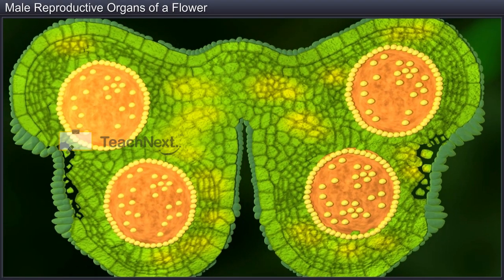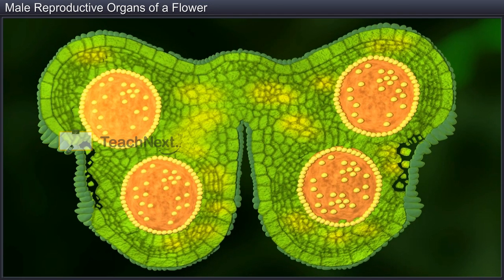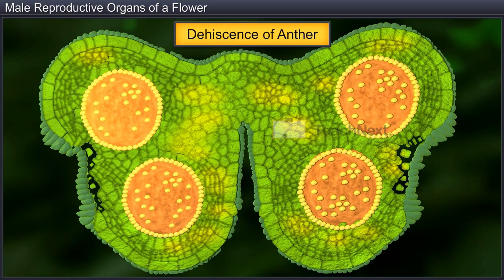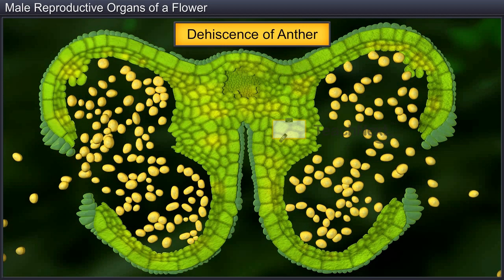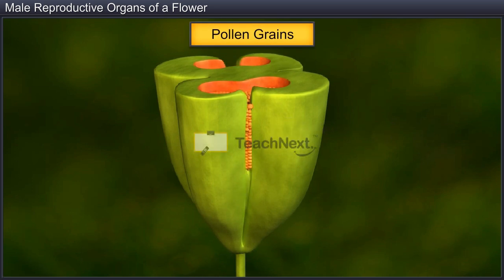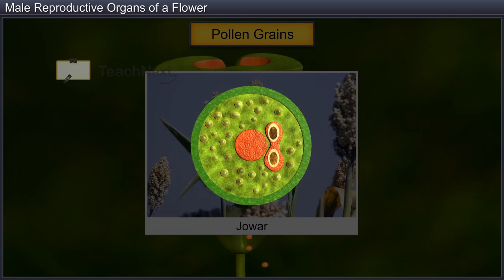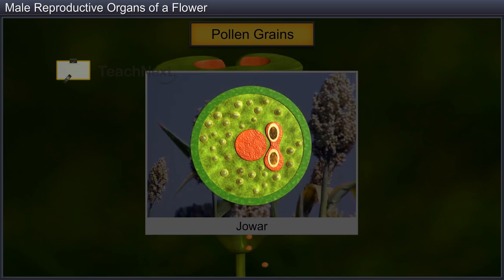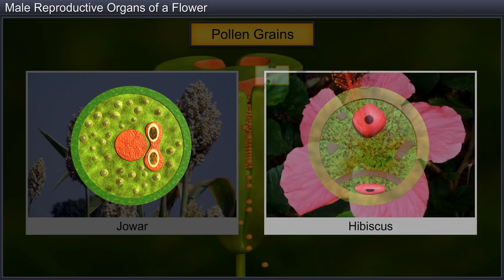After the formation of pollen grains, the endothecial cells lose water, which leads to tension in their cell walls. This tension causes the dehiscence or bursting of the anther along the line of dehiscence and results in the shedding of several thousand pollen grains. In cereals such as jawar, the pollen grains are shed at the three-celled stage, whereas in 60% of angiosperms, which include plants such as hibiscus, the pollen grains are shed at the two-celled stage.